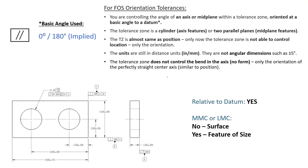I pulled this straight from our course — referencing the standard. Up here at the top it says for feature of size orientation tolerances. The first bullet is: you are controlling the angle of an axis or mid-plane within a tolerance zone oriented at a basic angle to a datum. So we're talking about parallelism — over here, 0 or 180 degrees.